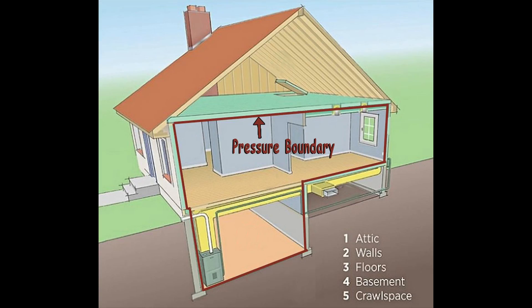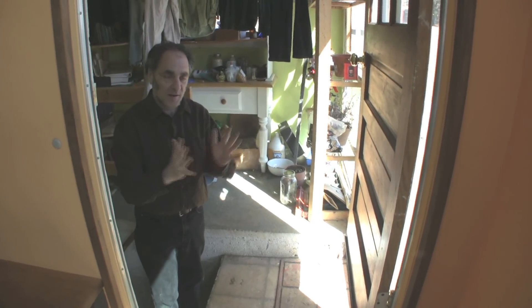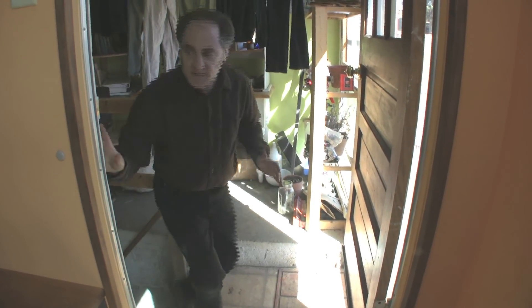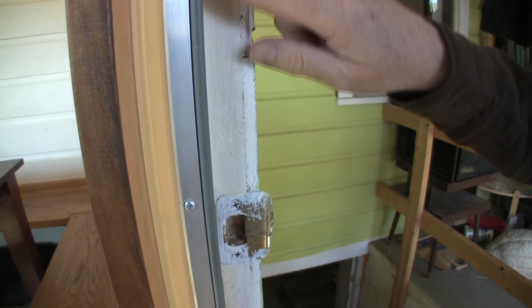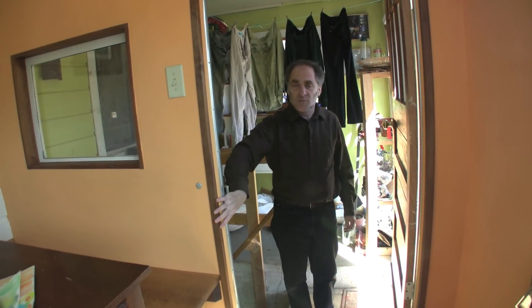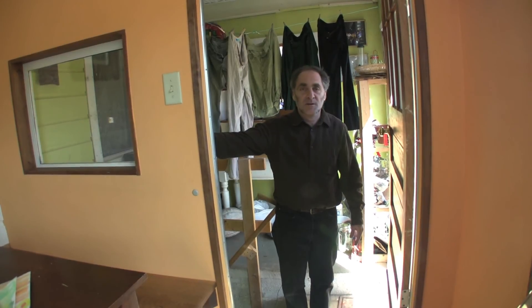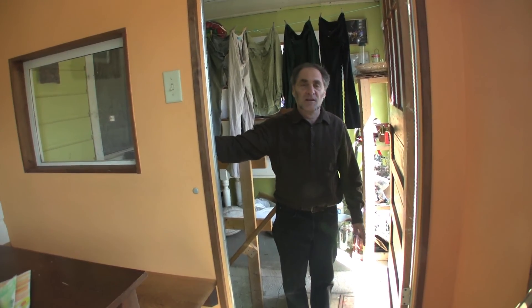Pressure boundary means air is not getting through. Thermal boundary means it's insulated. It's very important that you have both for all your conditioned boundary, and it's very important that both are together, not separated. In this house they've made a conscious choice to make this the conditioned boundary. There's weather stripping here, there's a rubberized door threshold and door bottom — that creates the pressure boundary. The rest of the wall, unless there are big holes in it, is a pressure boundary in itself. This particular window doesn't open, so it's pretty solid and tight.